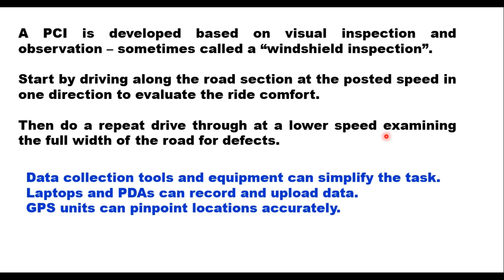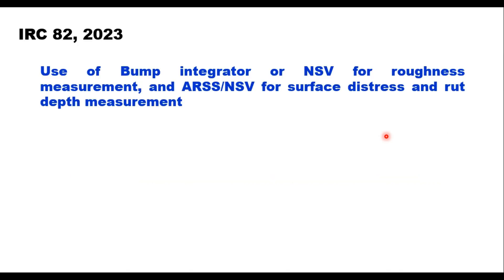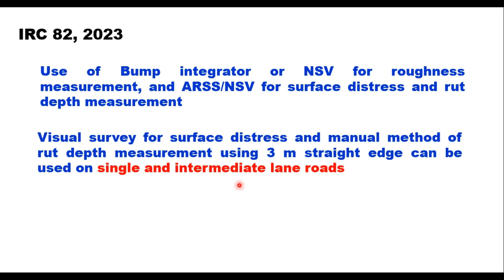Data collection tools such as laptops and PDAs can record and upload data efficiently, and GPS units can pinpoint locations accurately. IRC 82:2023 suggests use of a bump integrator or network survey vehicle (NSV) for roughness measurement, and automated road survey system or NSV for surface distress and rut depth measurement. Visual survey and manual rut depth measurement using a 3-meter straight edge can be used on single and intermediate lane roads.